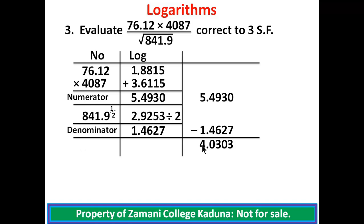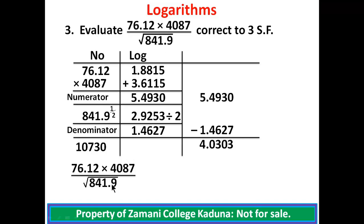To find the antilog of 4.0303, keep the integer part and go to the antilog tables. Check 03 under 0, differences of 3, giving 1073. The integer part is 4; add 1 making 5. Count 5 digits — since there is no fifth digit, add a 0 to make 5 digits. The evaluation gives 10,730, and to 3 significant figures we have 10,700.